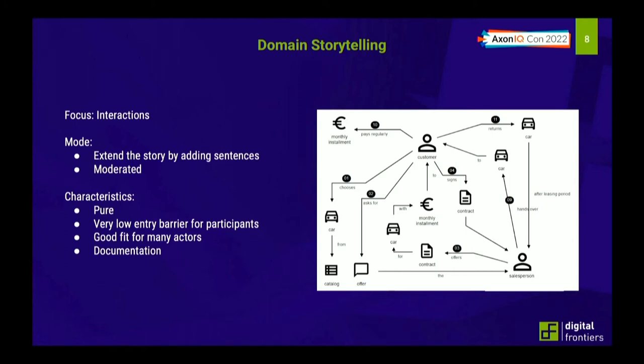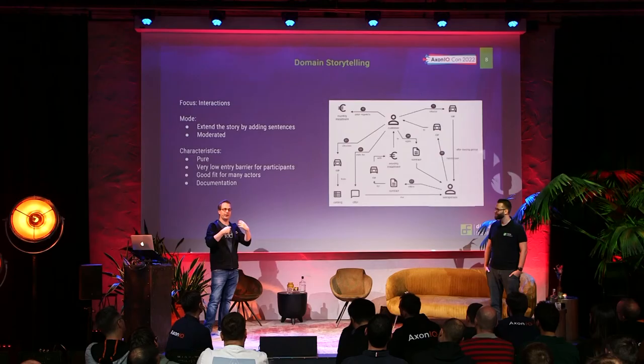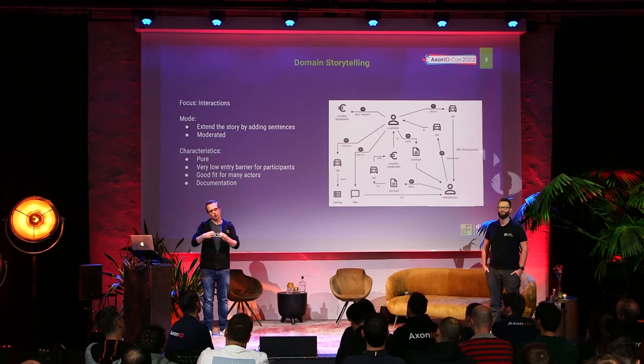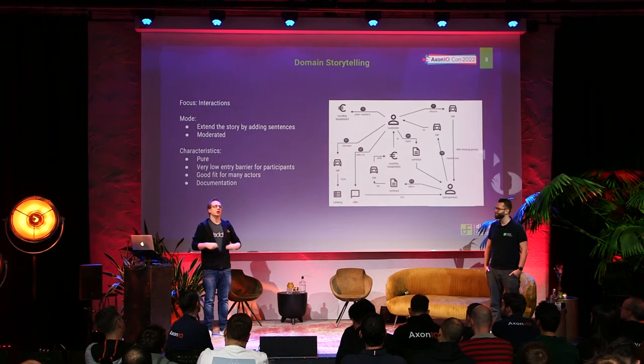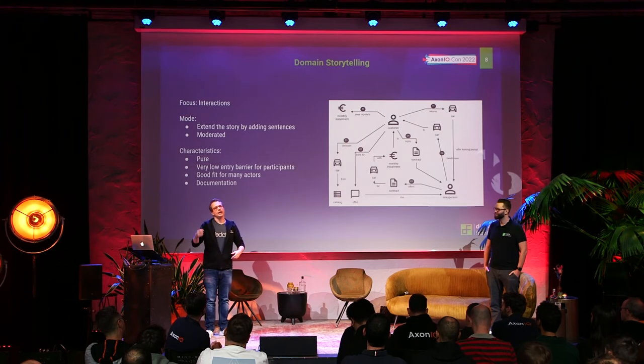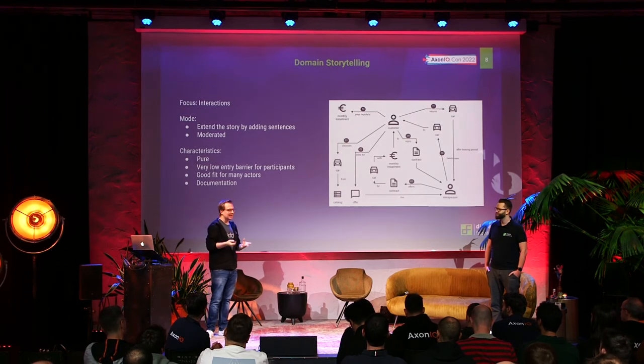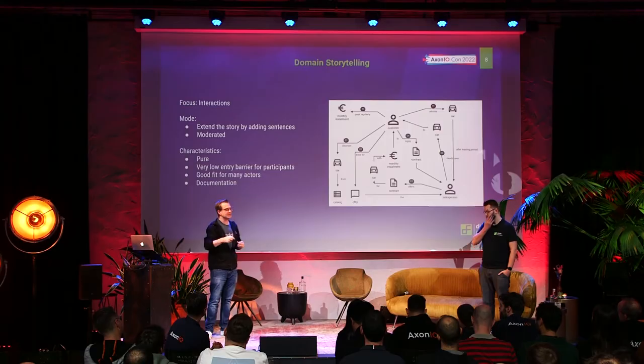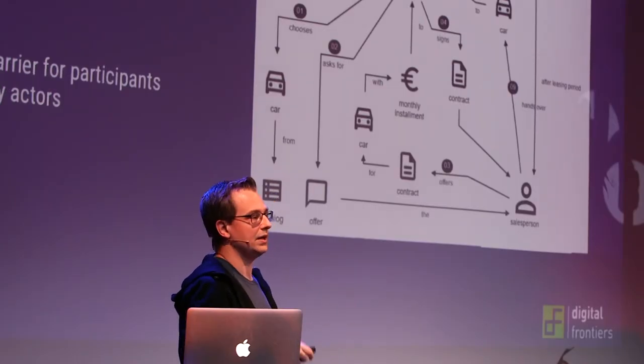You can also combine these approaches: run a big picture event storming to define your problem space, then either do domain storytelling for a pure model, or event modeling for a living document that evolves over time. In my personal opinion, event modeling combines two advantages of domain storytelling and event storming in the context of an Axon app: you have events, and you have a story with a clear process start and end. Event storming can't provide the story part because it's like a dictionary.